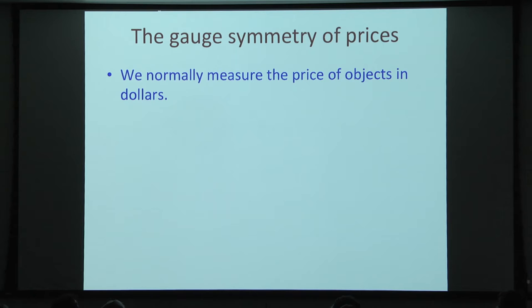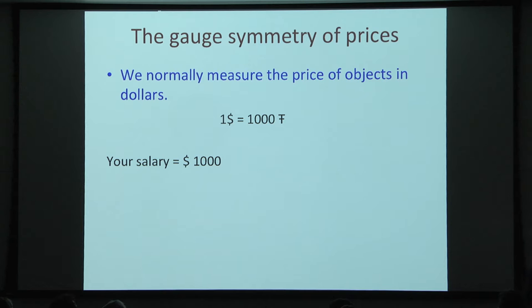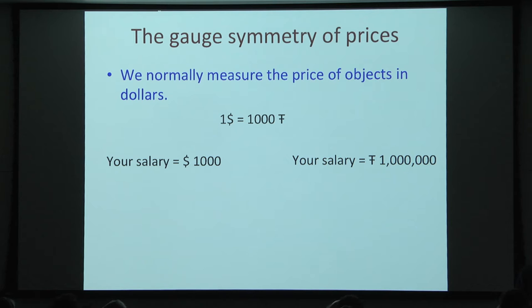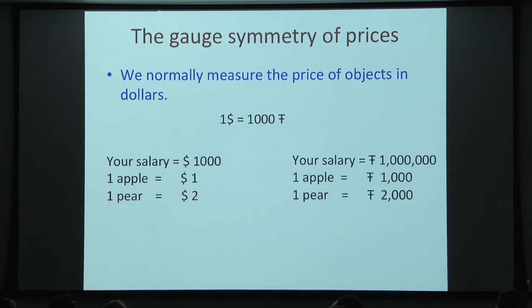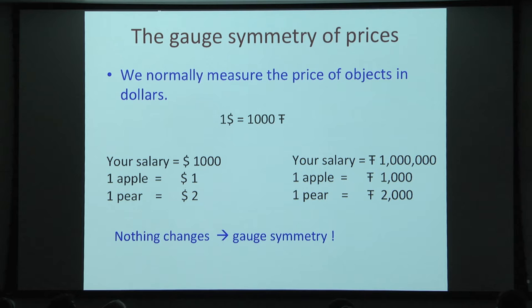The gauge symmetry will be the symmetry of prices. We normally measure the price of an object in dollars. Say your salary is a thousand dollars. Someone wants to make you a millionaire, so they define a new unit: one dollar equals a thousand — call it Trumps. Now your salary will be a million Trumps, and you became instantly a millionaire. That's until you realize all the other prices were also in dollars, and after you do this, the prices increase in a proportionate way. Therefore nothing really happens — nothing changes. This is purely a gauge symmetry; its effects are completely unobservable.